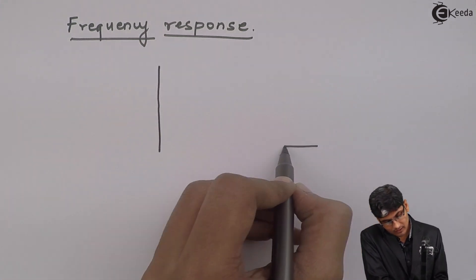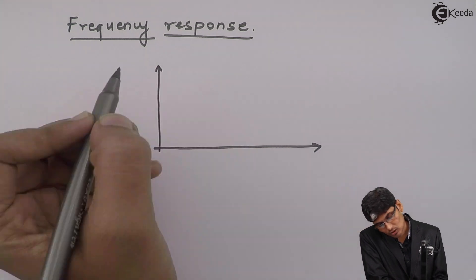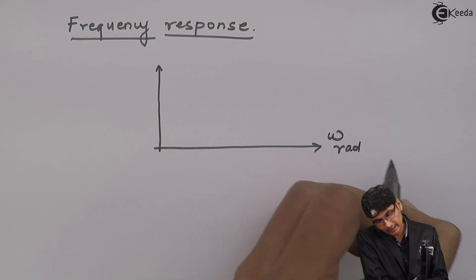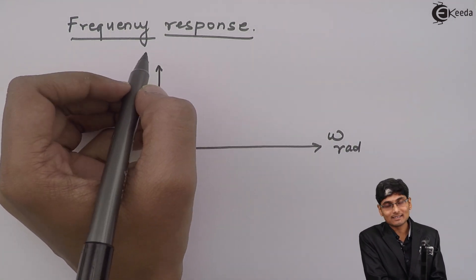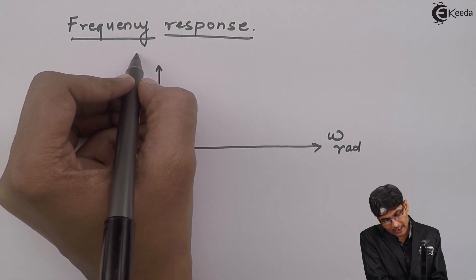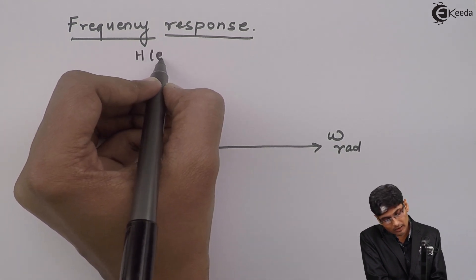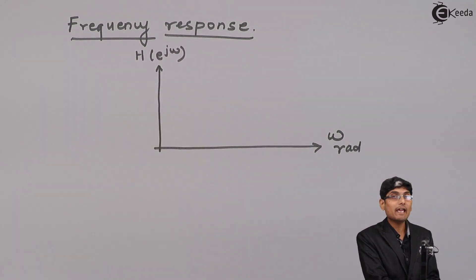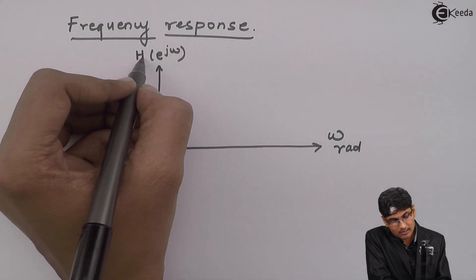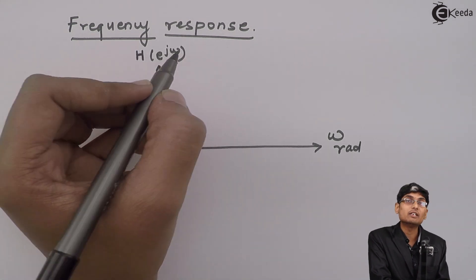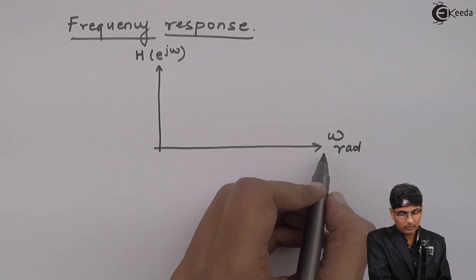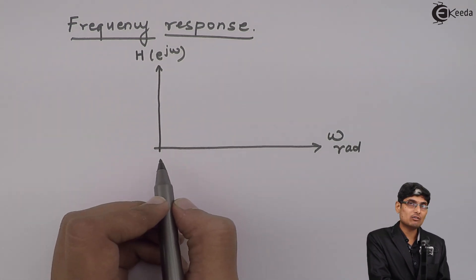We have a graph whose x-axis is omega in radians and the y-axis is a complex quantity. We write that complex quantity as H(e^jω). So frequency response is denoted by H(e^jω) which is plotted with respect to various values of omega.